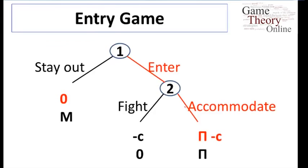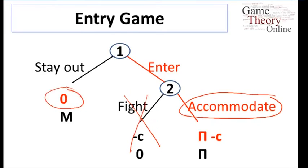So in this particular case, now that we think that player two is going to accommodate, we can essentially ignore this part of the game. Player one's choice becomes a choice between zero if they stay out, positive profits if they go in. Remember pi is assumed to be bigger than c, so now we end up with a prediction of enter and accommodate.